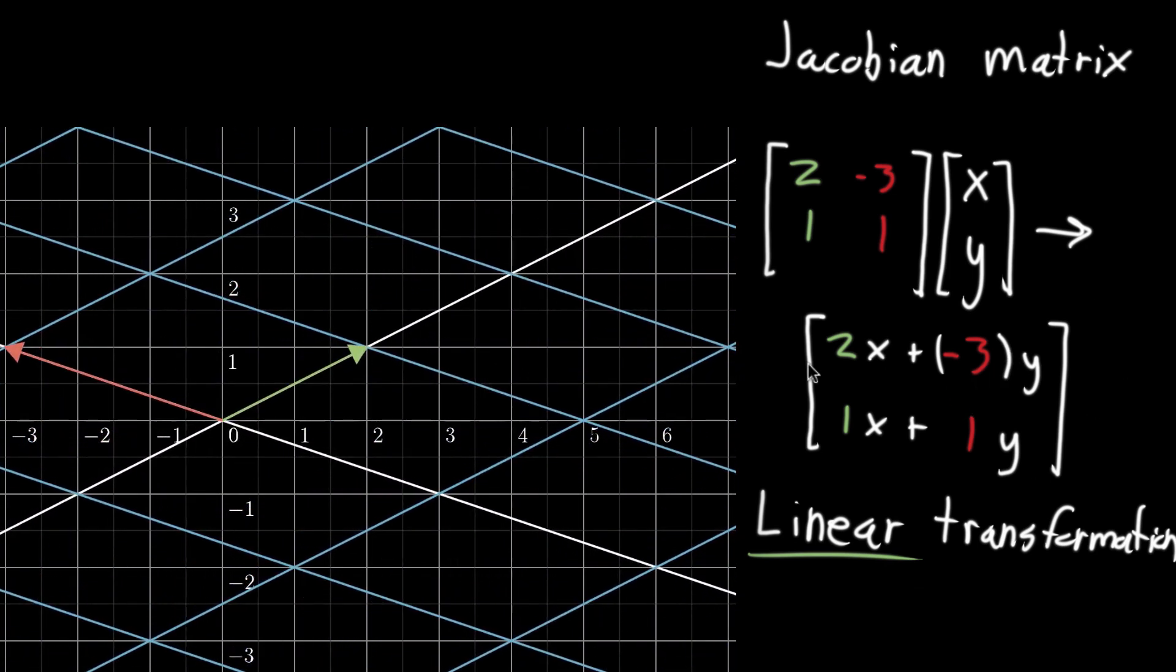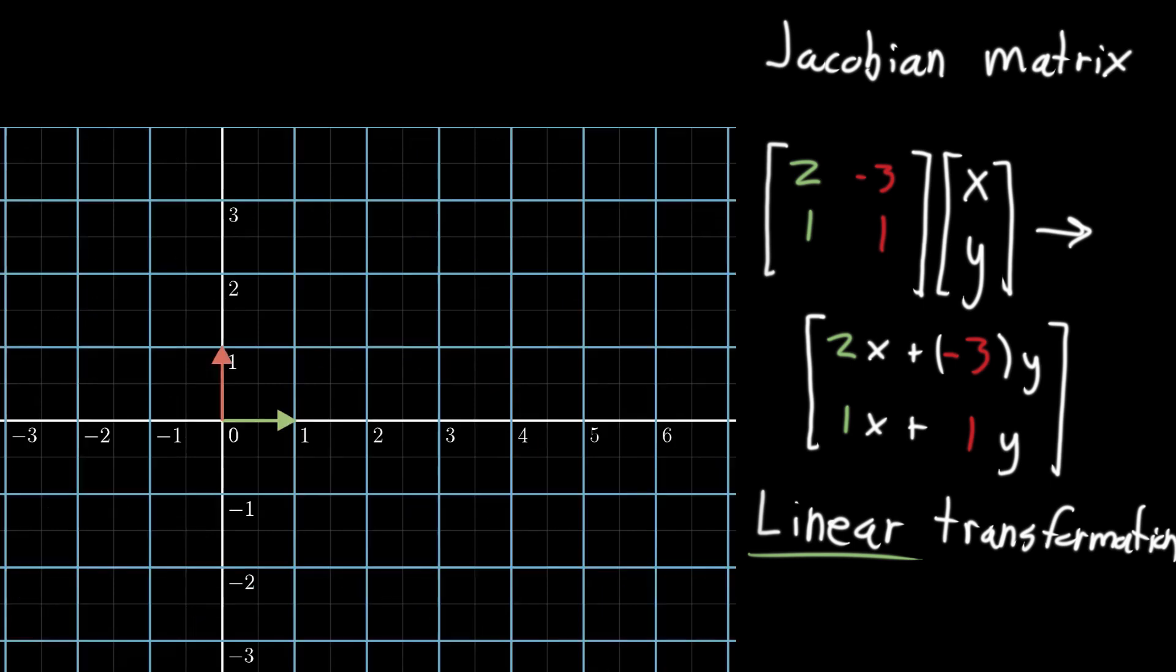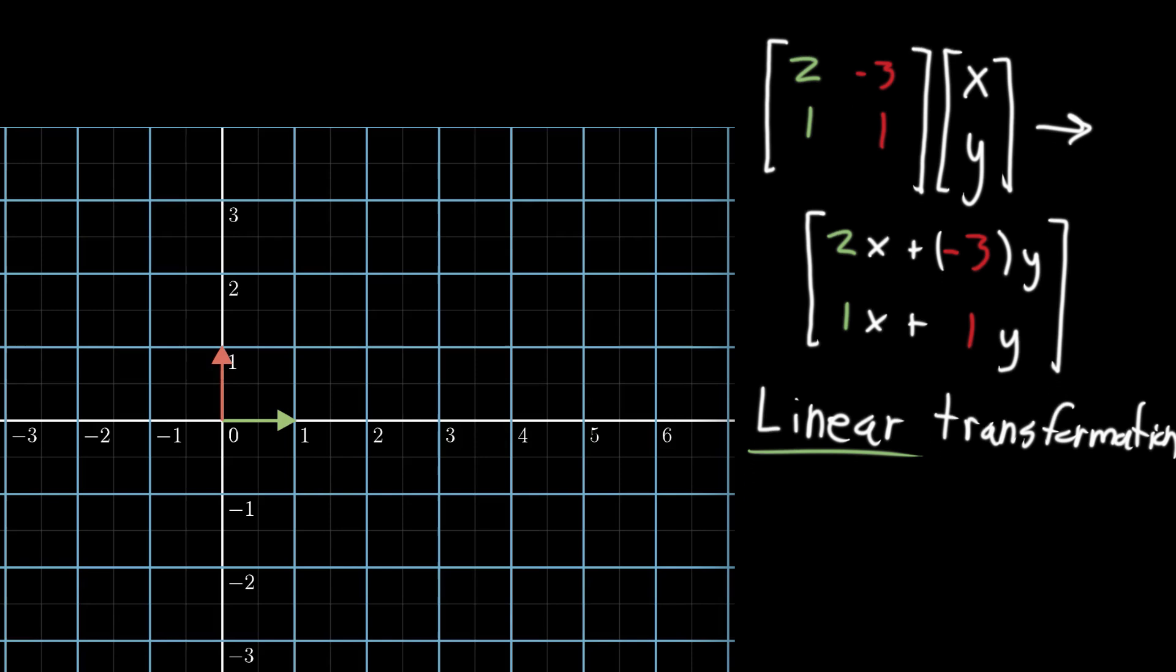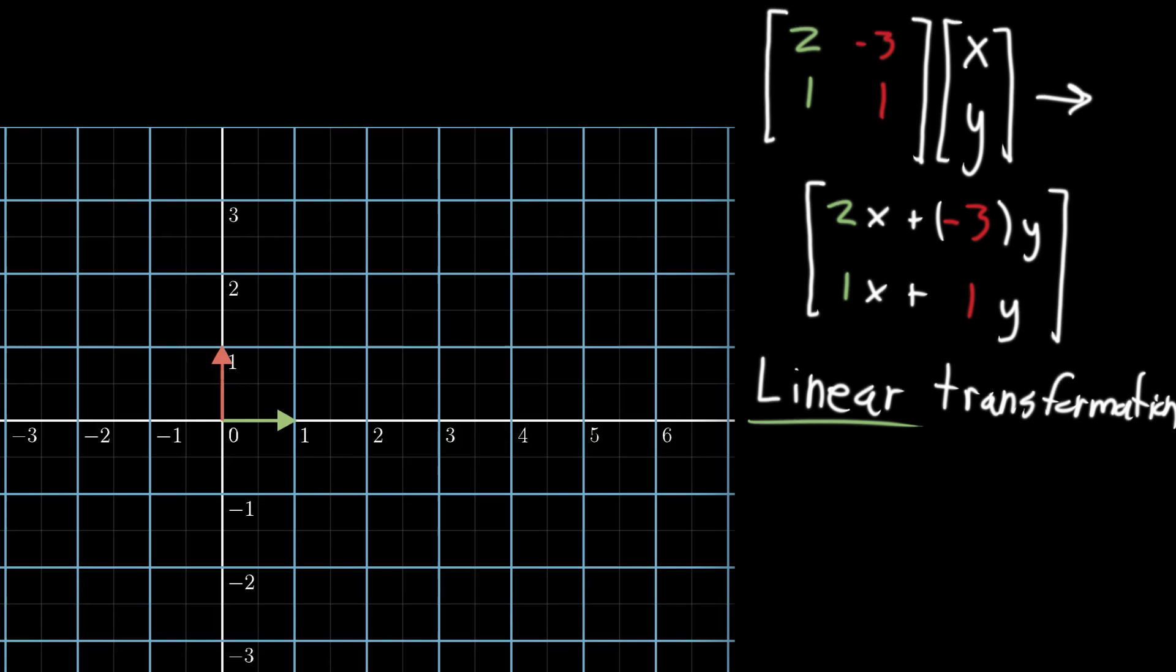The other thing to notice is I have these two vectors highlighted—the green vector and the red vector. These are the ones that started off, if we back things up, as the basis vectors. Let me make a little bit more room here. The green vector is (1, 0)—1 in the x direction, 0 in the y direction. And then that red vertical vector here is (0, 1).